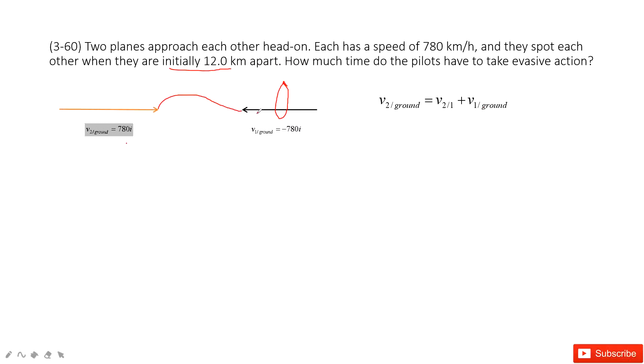And then we can find the velocity. The airplane 2 to airplane 1 is just velocity 2 to the ground subtract the velocity 1 to the ground.